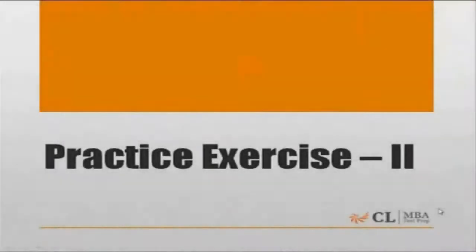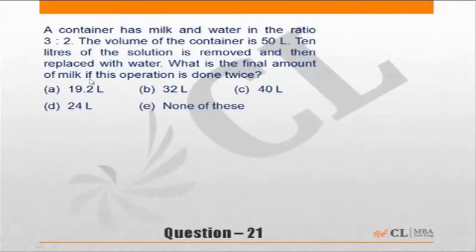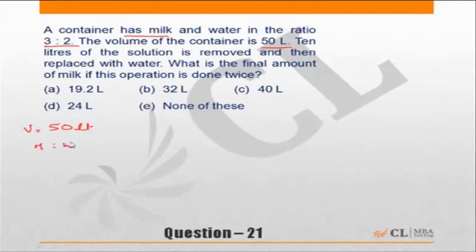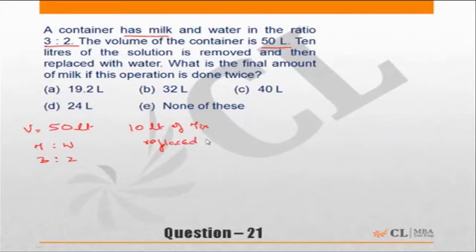Let's do Practice Exercise 2, Question 21. A container has milk and water in the ratio of 3 to 2. The volume of the container is 50 liters. 10 liters of this mixture are removed and replaced with water. What is the final amount of milk if this operation is done twice?